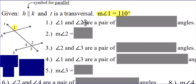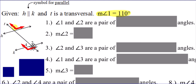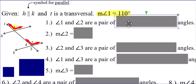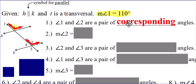Problem number one: angle one and angle two are a pair of something angles. Let's take a look at this together. Angle one, angle two — they are actually in matching positions. Angle one is kind of like this top right angle. If you would take that top part of the picture and move it down here, you see angle two is in that same position — the top right angle for this bottom part of the picture. So what do we call angles that are in matching positions? You can look it up on the first page if you need to. Corresponding angles.